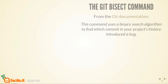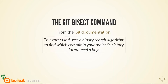The topic of today is the Git Bisect command, and the best place to start is the Git documentation. It states: 'This command uses a binary search algorithm to find which commit in your project's history introduced the bug.' That sounds pretty awesome, but what is a binary search algorithm?